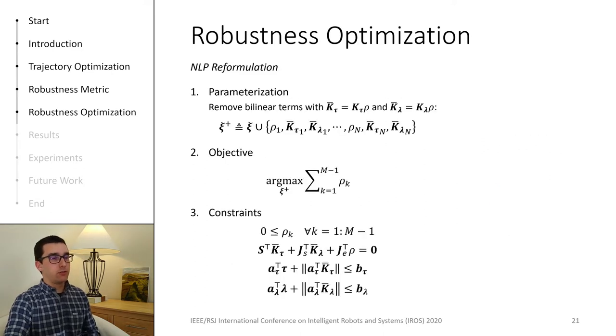First, we extend the vector of decision variables to include the gain matrices as well as a scalar representing the magnitude of the smallest unrejectable force. Here, we denoted it with rho. To maximize robustness, we simply need to define an objective function that maximizes the sum of all the rhos.